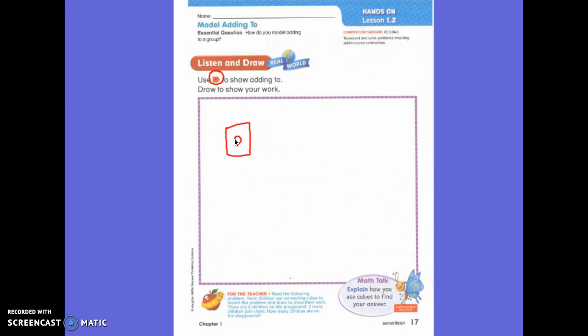There are six children on the playground. So go ahead and draw your cubes. You need to raise your hand, but you need to do this part first, and then you will go. Two more children join them. So go ahead and draw that.